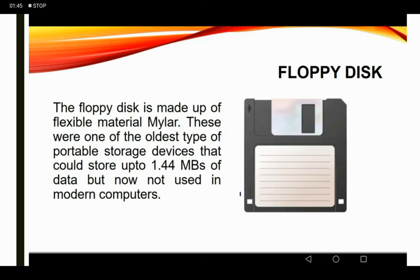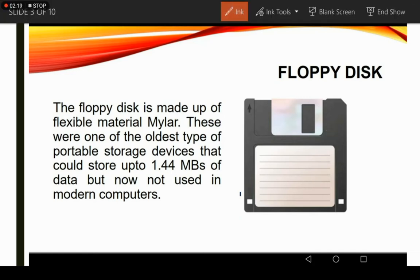The floppy disk is made up of flexible material. These were one of the oldest types of portable storage devices that could store up to 1.44 MB of data, but are now not used in modern computers. Floppy disks were earlier used for memory, but we no longer use them because of their limited size — only 1.44 MB. Nowadays, if we click a picture on a mobile phone, it will be 3 to 4 MB in size.